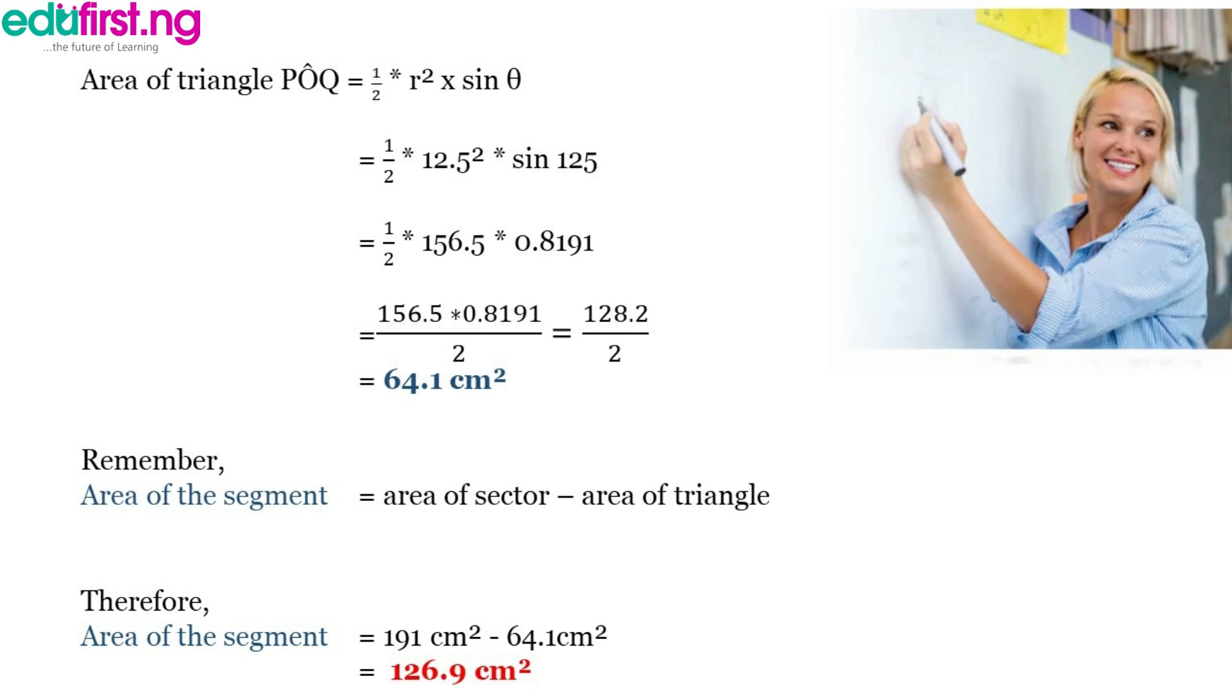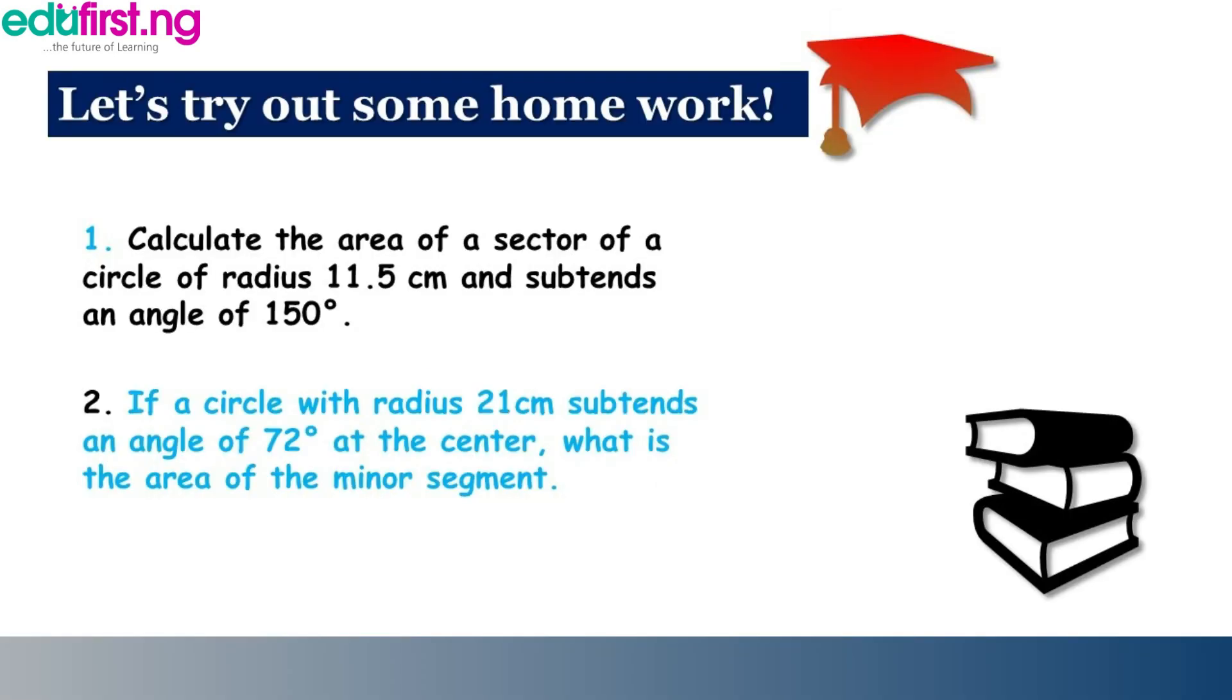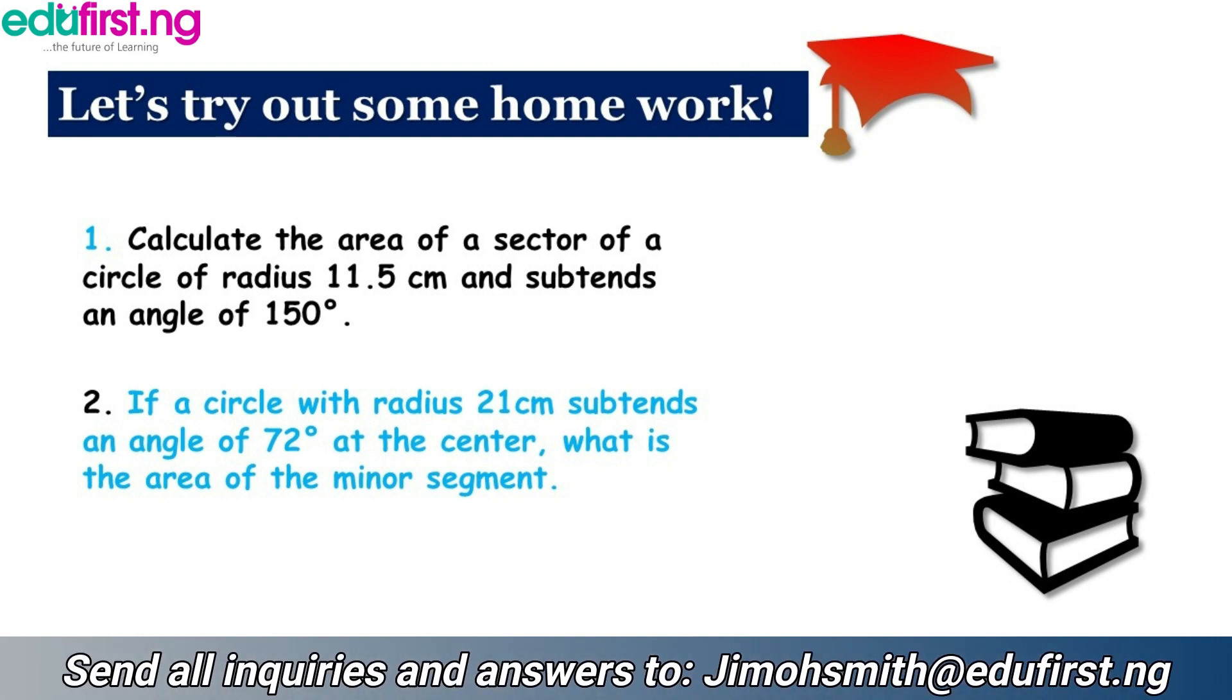Okay, remember area of segment is equal to area of sector minus area of triangle. Don't forget that. So now we've gotten the area of sector, we have the area of the triangle, we simply subtract the values. When we do that we would have 126.9 cm squared. You can try that on your own. So that's it for area of sectors and segments. So here is a homework for you to try out simple two questions: one for area of sector and one for area of segment. Success, see you in the next class.